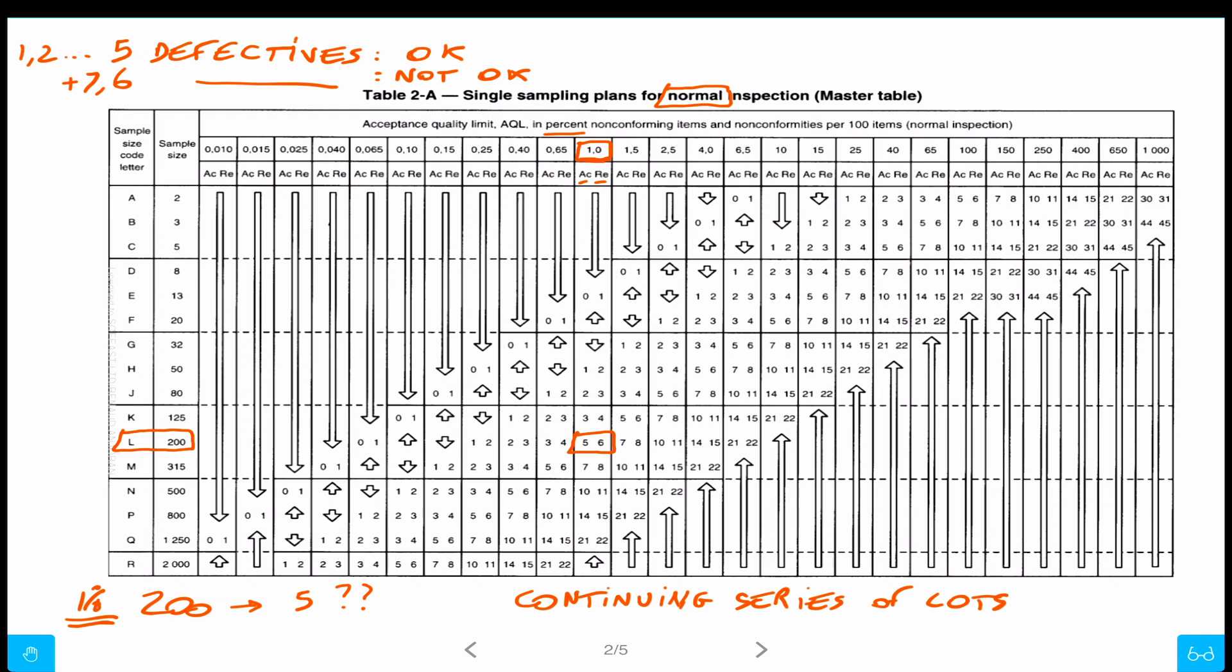That means the AQL actually is sort of a limit over a number of batches, on average. Sometimes yes, one batch will have a higher percentage, but then some other times maybe some batches will have a lower percentage. So this one is not so good, but on average over the whole production - maybe it's 50 different batches - overall we don't want to be more than one percent, with a certain degree of certainty. That's what it means.